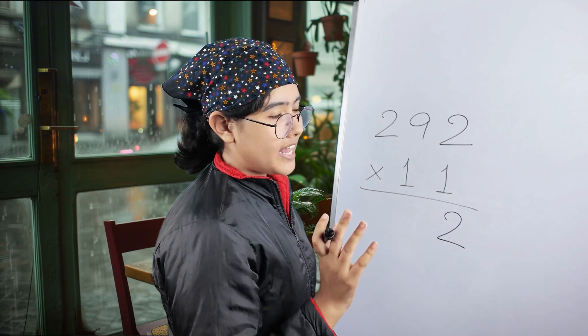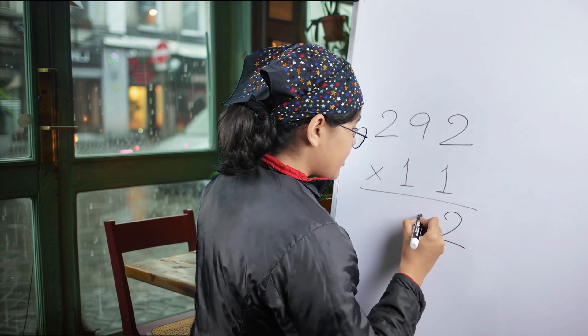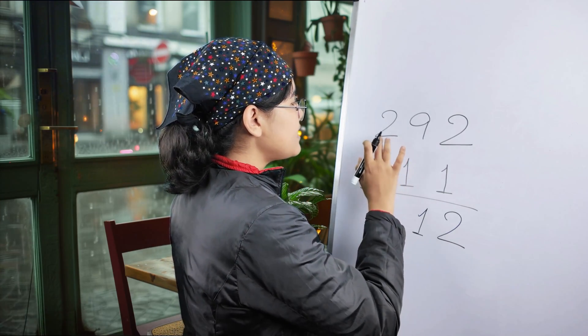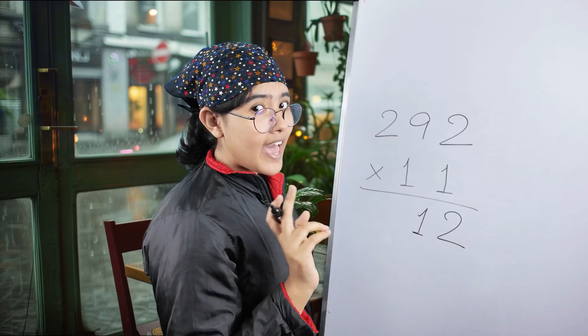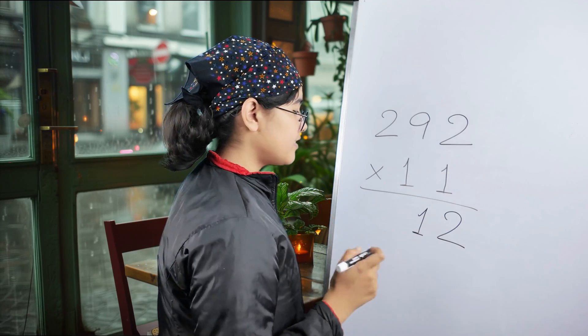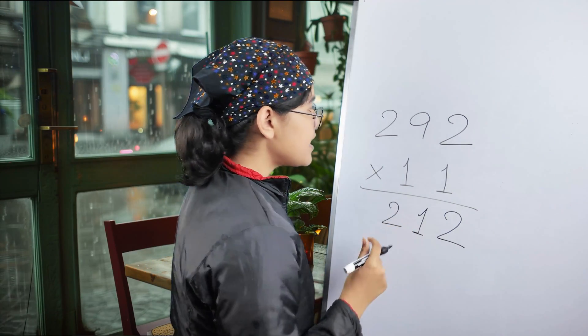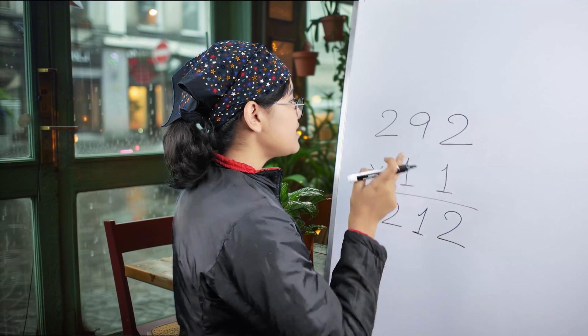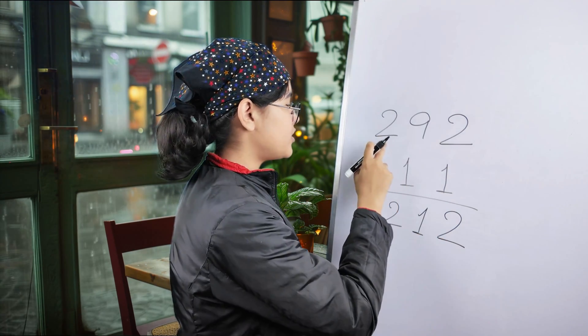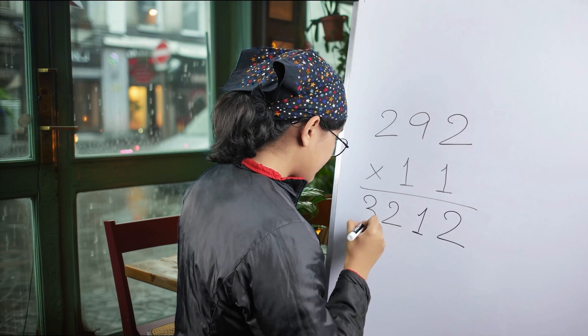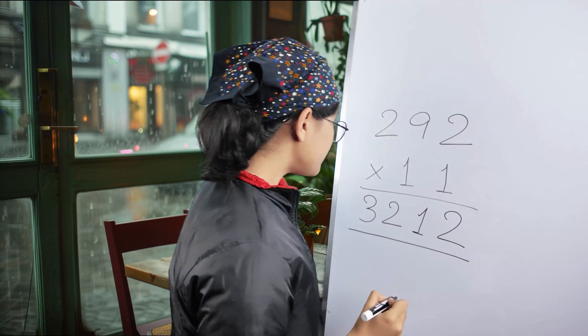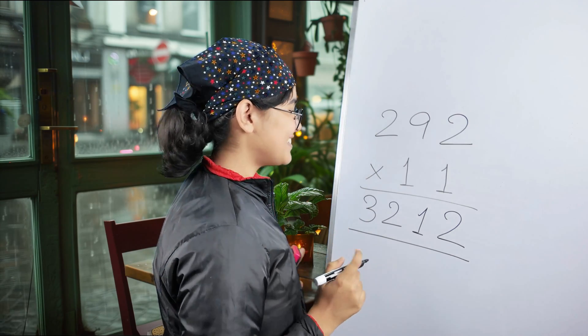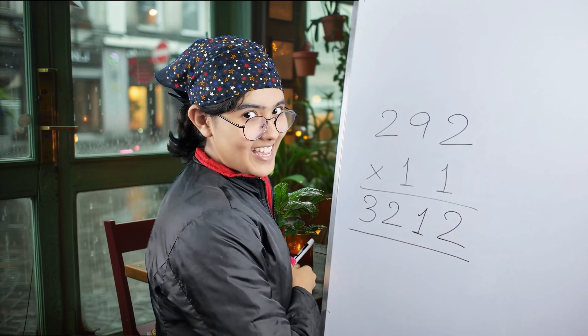Now just start adding the numbers first. 9 plus 2 equals 11. We'll write 1, keeping carry over 1. Again, 2 plus 9 equals 11. Now add this carry over 1, so it will be 12. Keeping 1 again for carry over and adding that 1 over here with 2, it becomes 3. So your final answer is 3,212. Nice one. Easy, isn't it?